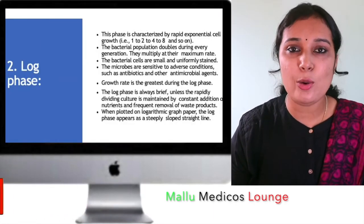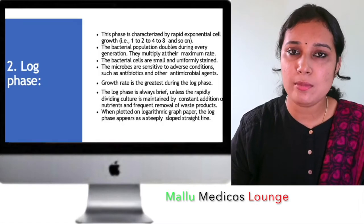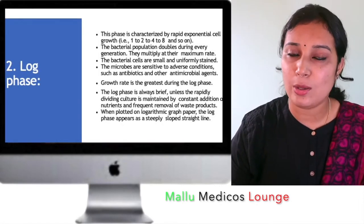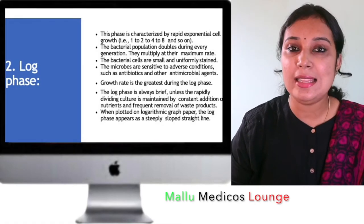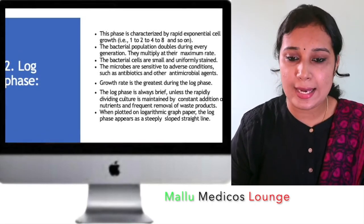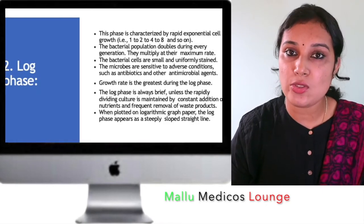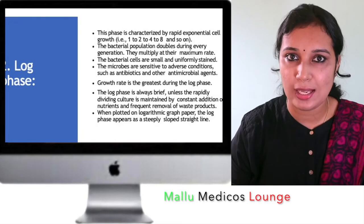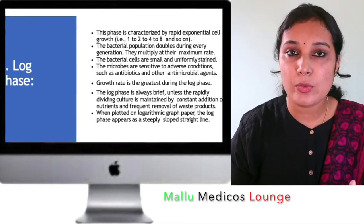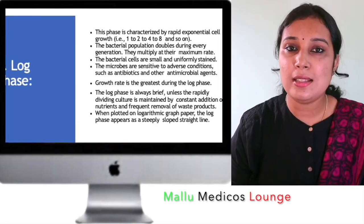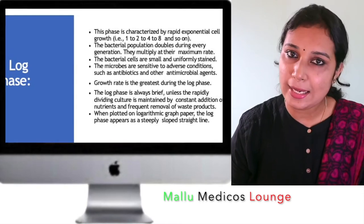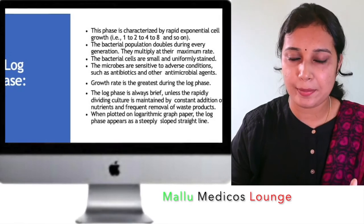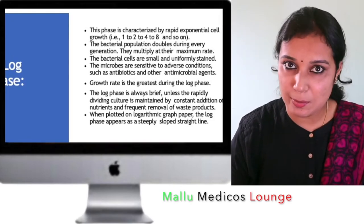The next phase is the log phase — also known as the logarithmic phase. This phase is characterized by rapid exponential cell growth. In the lag phase we don't have cell multiplication, but in the log phase the number of cells is enormously increasing. During every generation, the number of bacterial cells is doubling up. They are multiplying at the maximum rate.